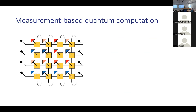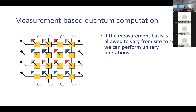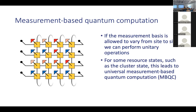The next level of complexity from quantum wire is quantum computation. What we need is to vary the measurement basis from site to site. If you're allowed to do measurements in different bases at different sites, then you can do universal quantum computation with an appropriate resource state such as the cluster state.